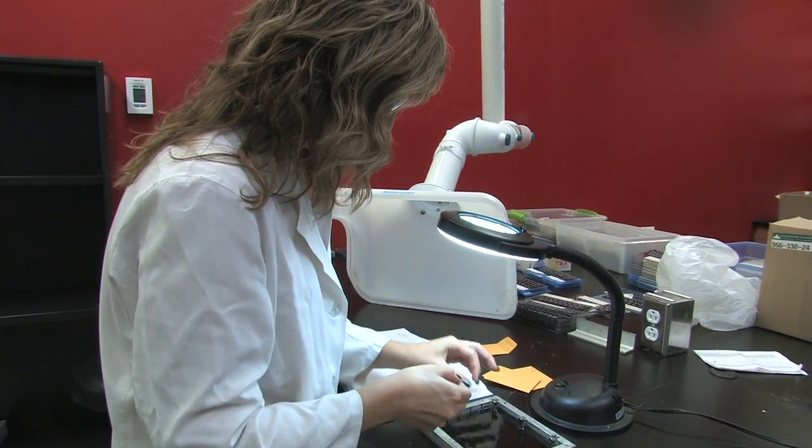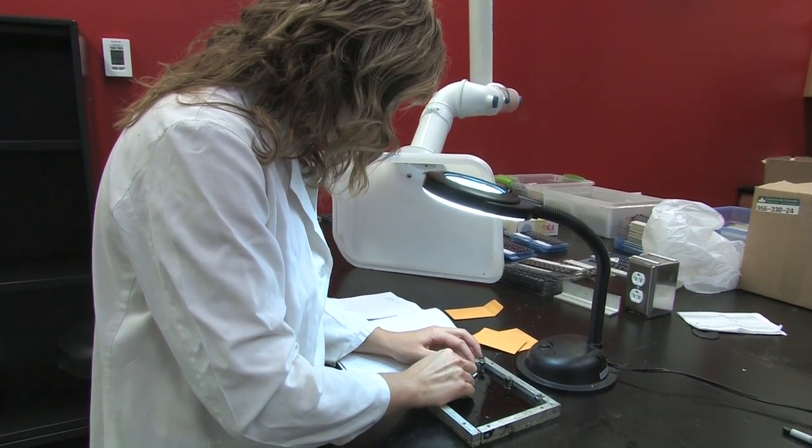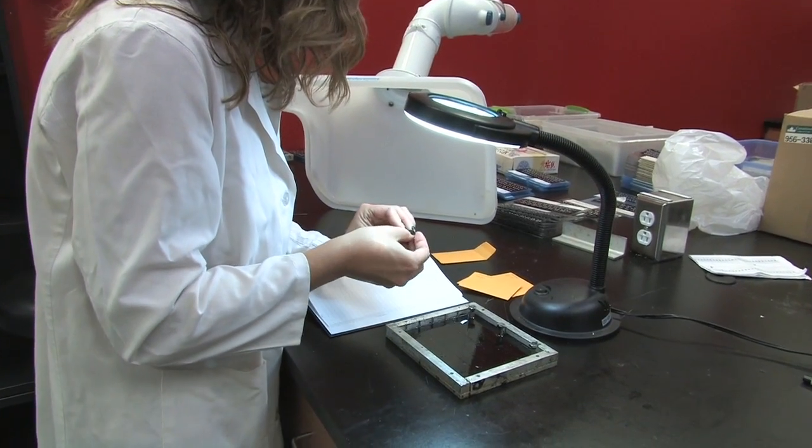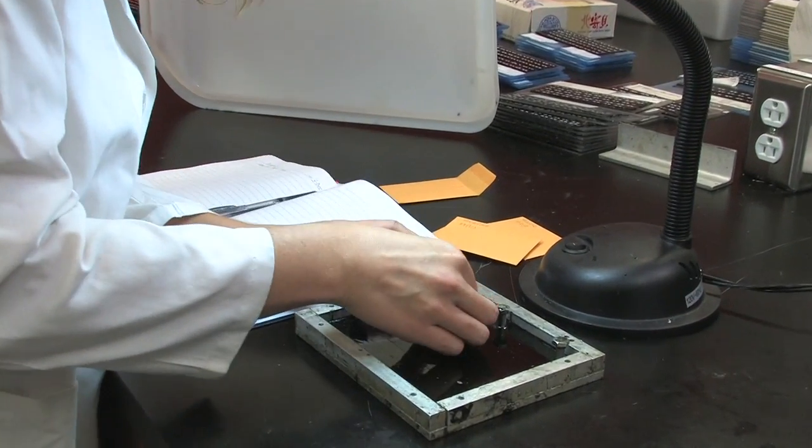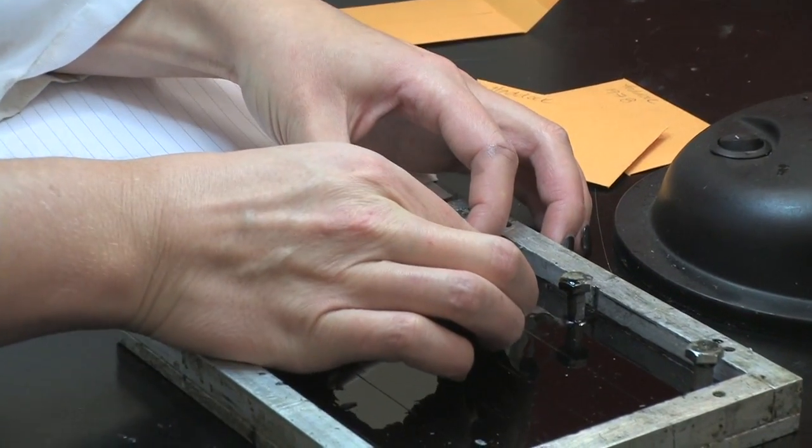Once the cores are marked the otoliths are then placed sulcus side or convex side up so the marked cores lie aligned on the etched lines. Place the pairs of otoliths on the embedding medium with the anterior or thicker end up and the posterior or pointy end down away from the screws on the tray.